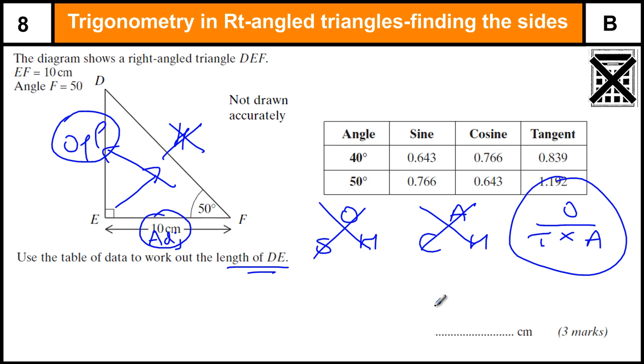Using a formula triangle to find the opposite side, the opposite side equals tan of the angle, tan of 50 times by the adjacent side which is 10. We go to our table, we want angle 50, we want the tan of the angle 1.192, and we times that by 10. We get 11.92 for three marks.